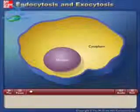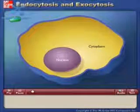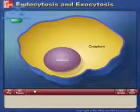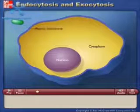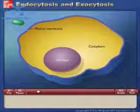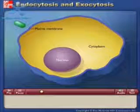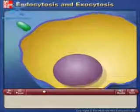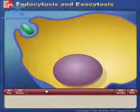The substances taken in by single-celled organisms are often particles or large polar molecules that cannot cross the hydrophobic plasma membrane. Many single-celled eukaryotes employ endocytosis to ingest such food particles. In this process, the plasma membrane extends outward and surrounds the food particle.